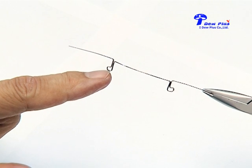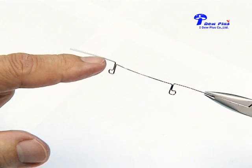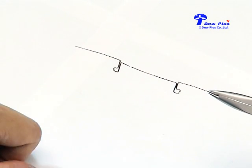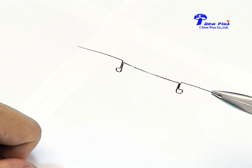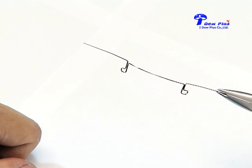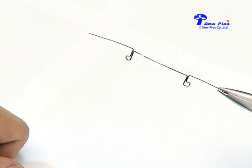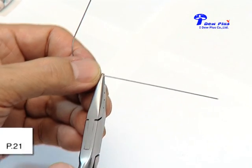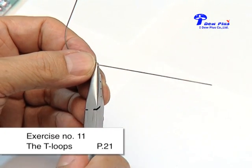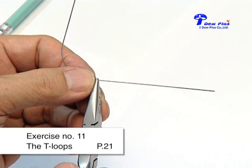This part is designed for extrusion, so the L-Loop is used for leveling purposes. Exercise number 11, the T-Loop. Next is exercise number 11, the T-Loop.